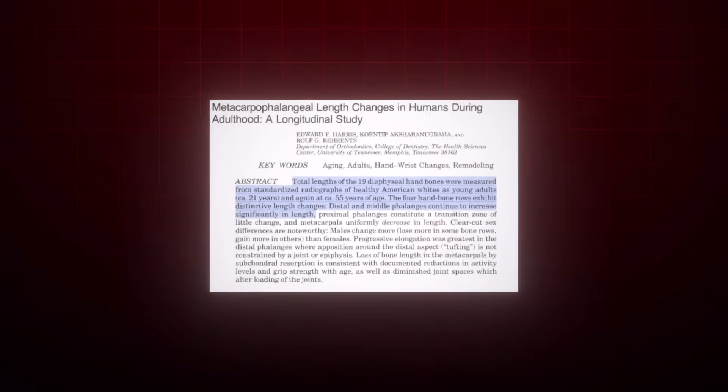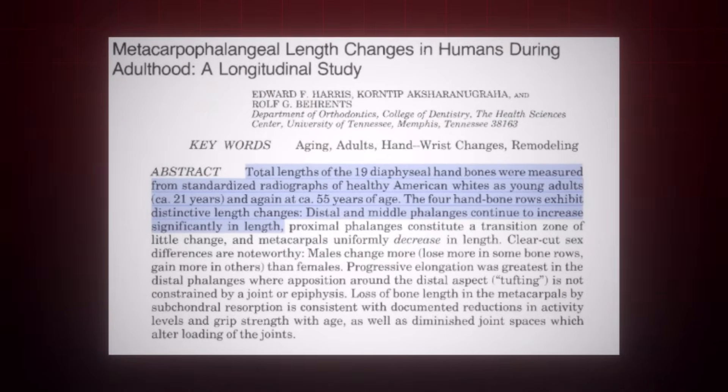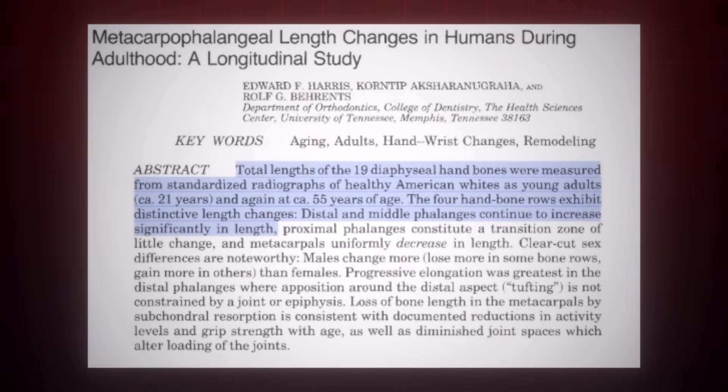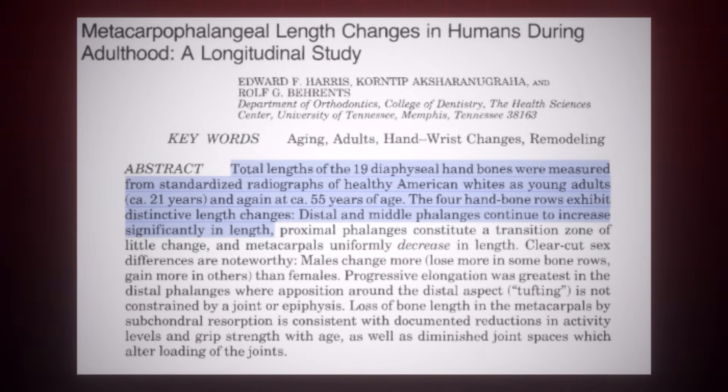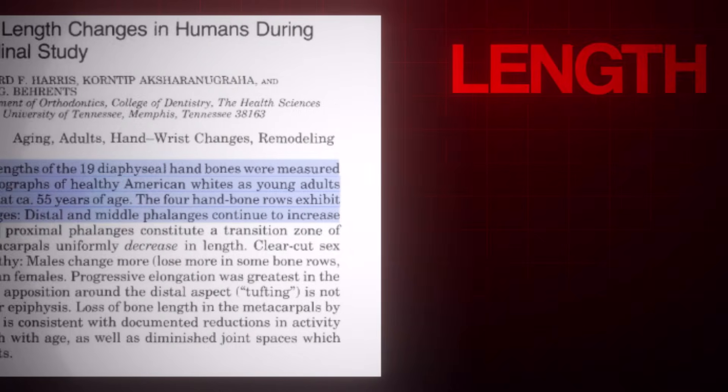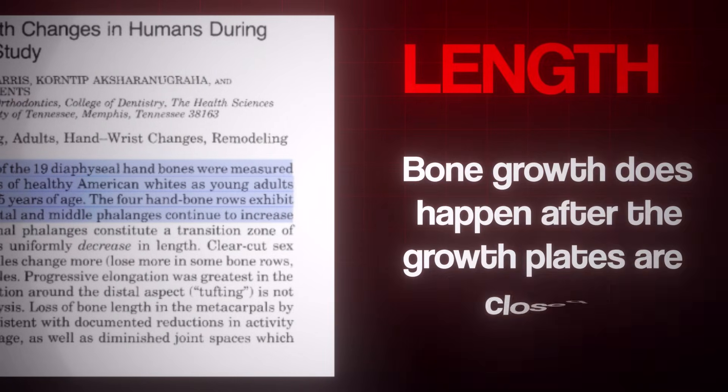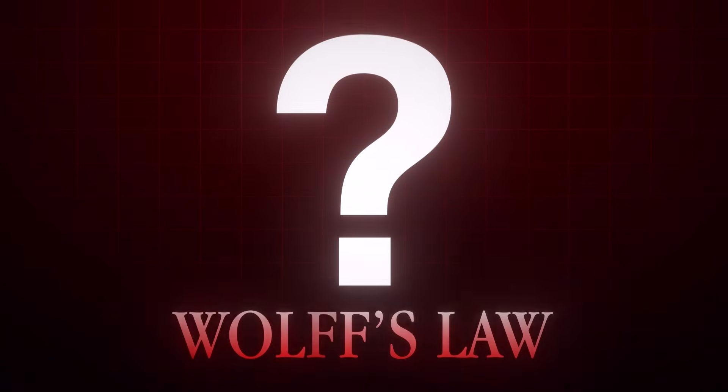This American study from 1961 showed that the growth of hand length after the growth plates have closed is not tiny at all, with huge increases in size and length of the bone, even four years after the growth plates in the hands were fully closed. That's not only an insane increase in length, but it again proves that bone growth does happen after the growth plates are closed. But how? The answer is very simple, Wolf's law.